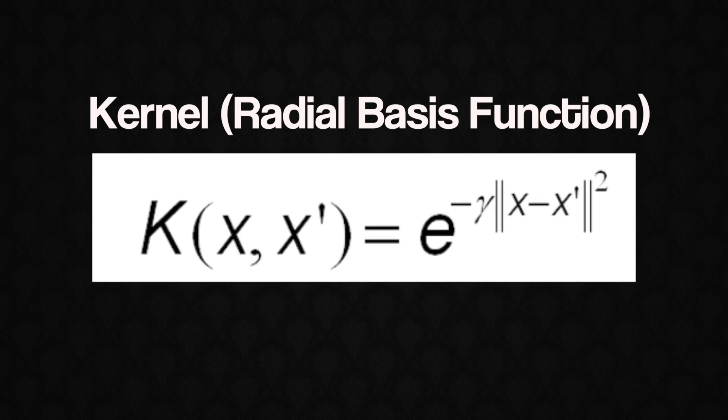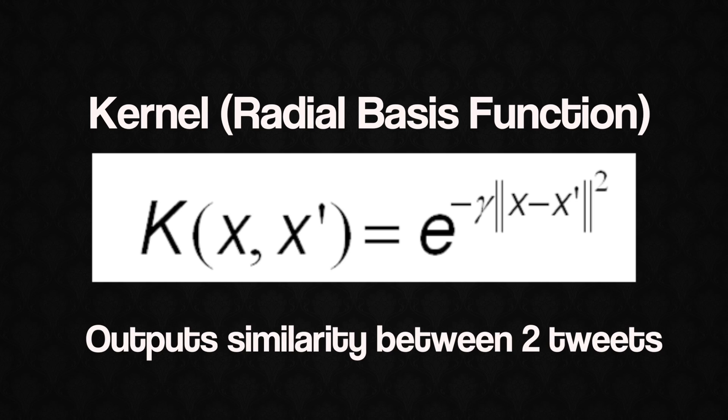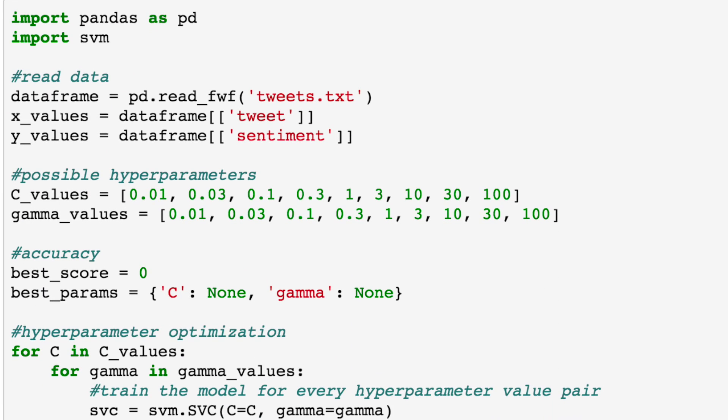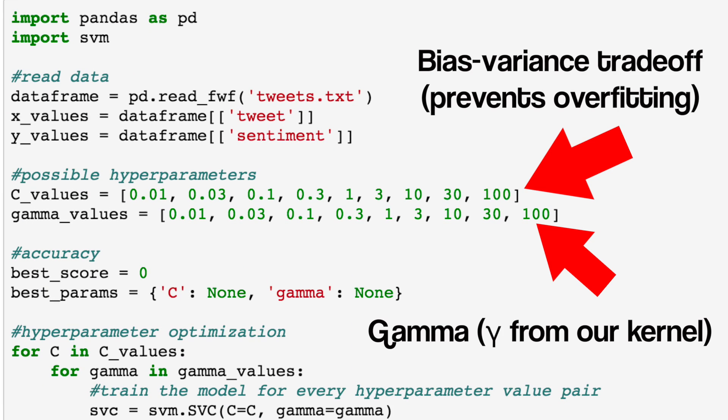We define our kernel or similarity function between tweet vectors as the radial basis function, which takes as input two vectors and outputs a similarity based on the following function. So the more similar two tweets are, the higher the output value from our function.